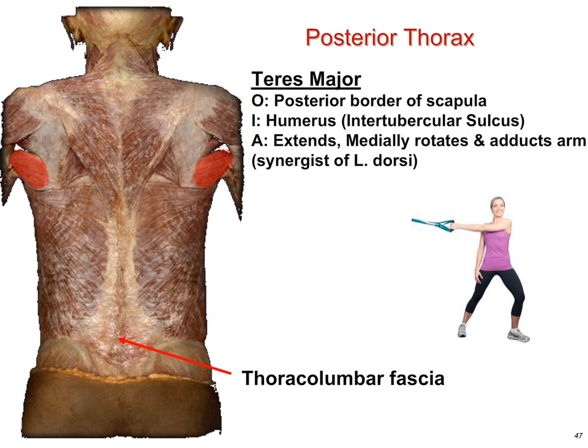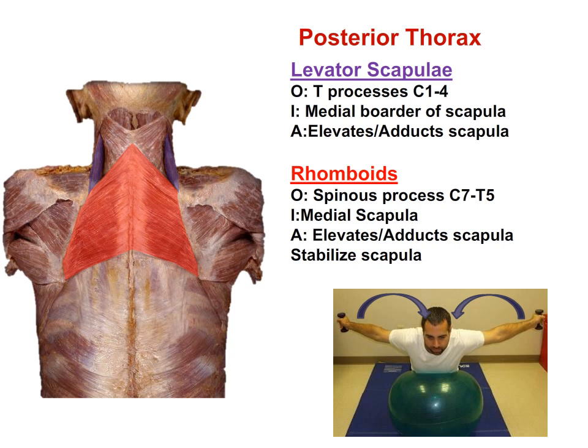Now we'll look at muscles deep to the trapezius — removing it exposes the levator scapulae and rhomboid major. The levator scapulae originates on the transverse processes of the first four cervical vertebrae and inserts on the medial border of the scapula. Its function, as stated in the name, is to elevate and adduct the scapula. The rhomboids originate on the spinous processes of C7 through T5 and insert on the medial scapula. Their function is to elevate and adduct the scapula and to stabilize it during other arm movements.